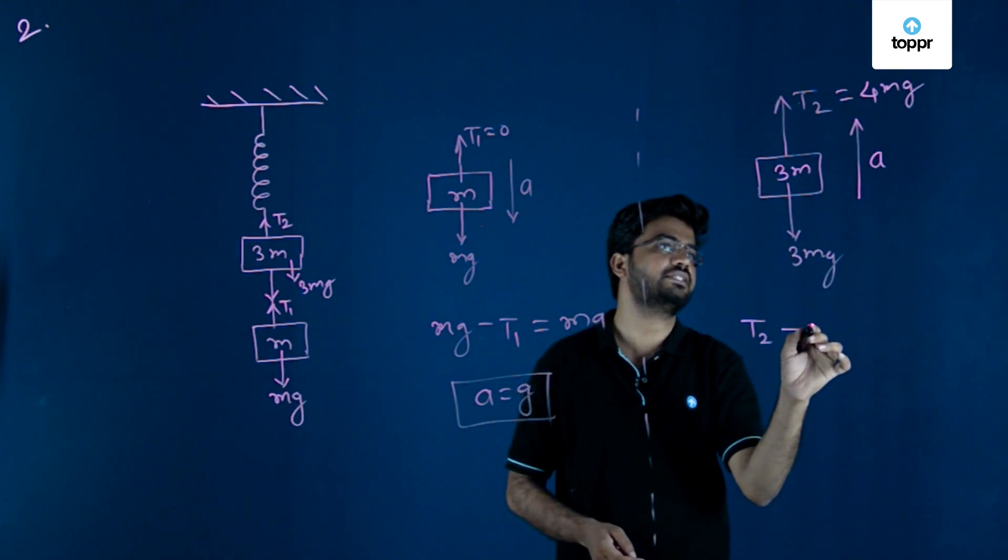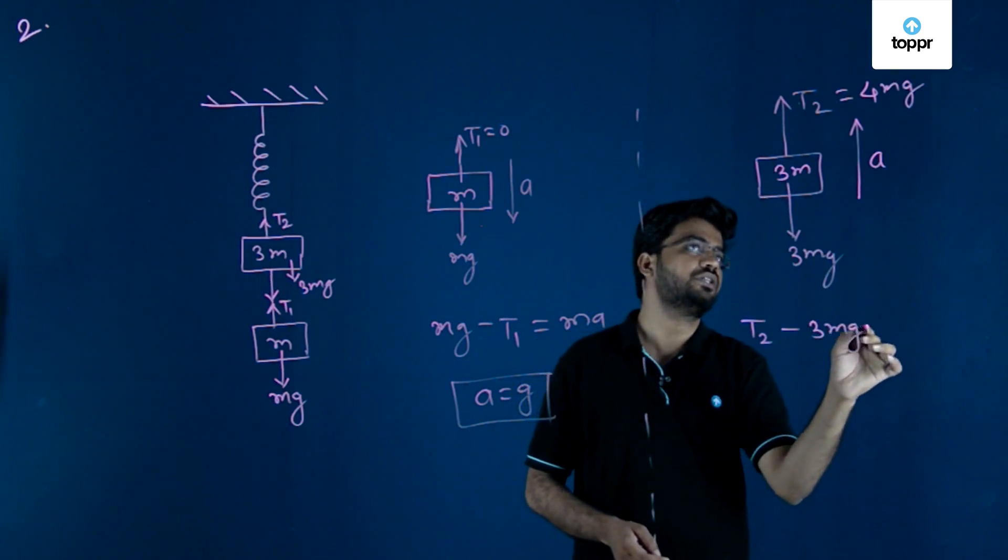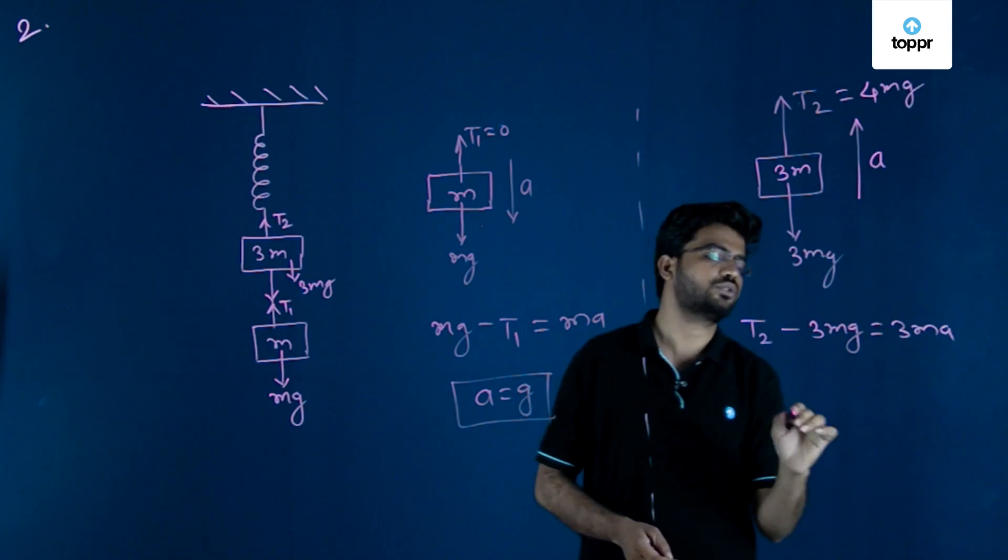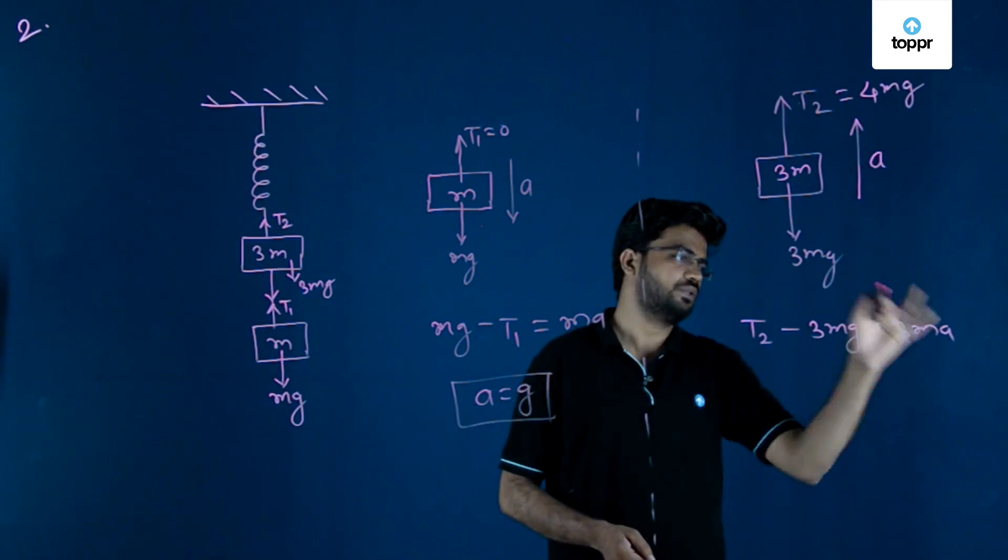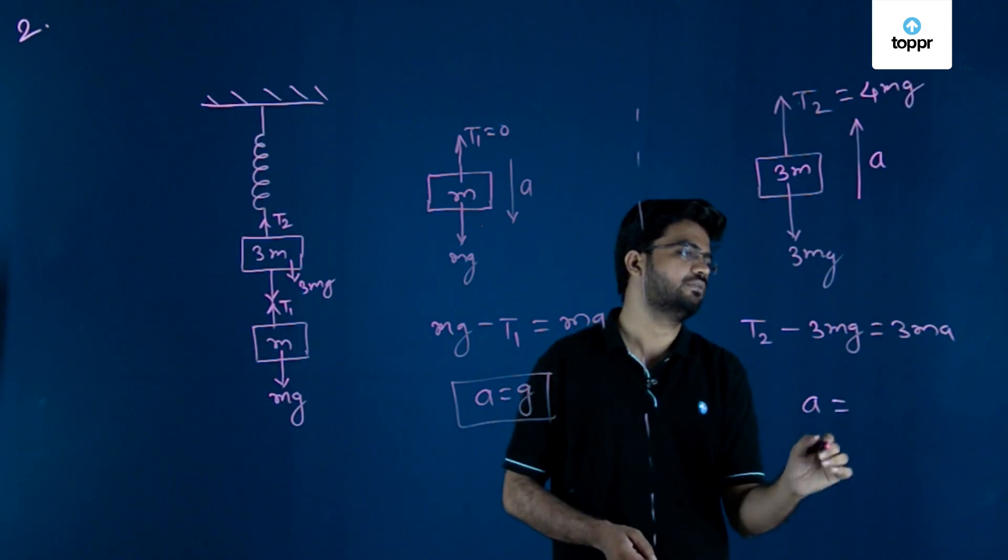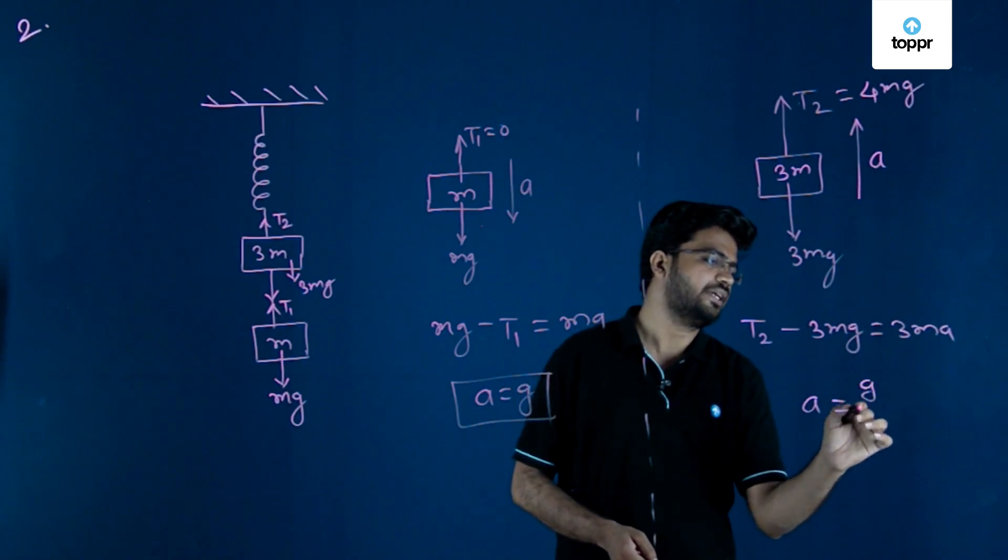Here you can write T2 minus 3mg equals 3ma. If you calculate this, you will get a equals g by 3.